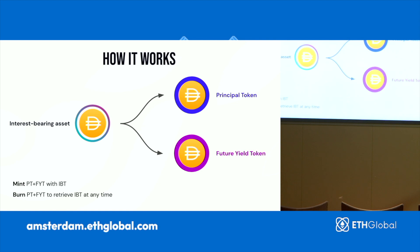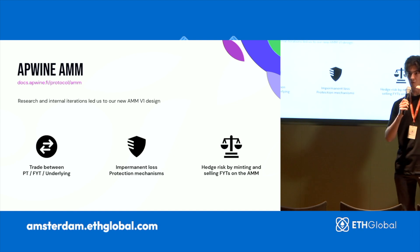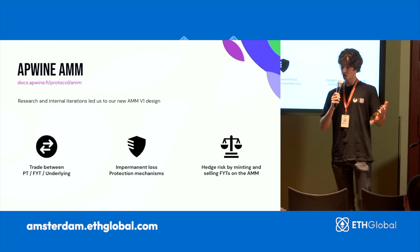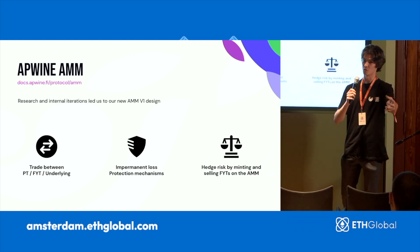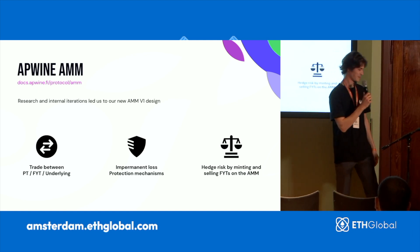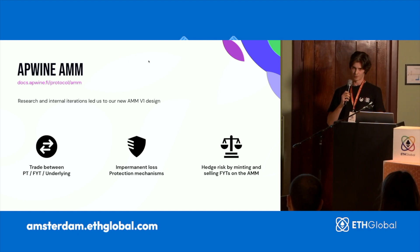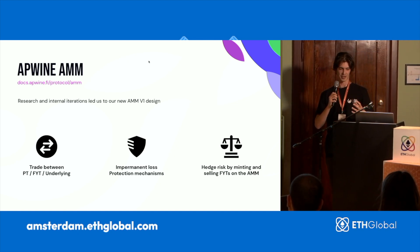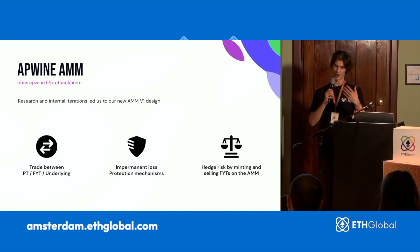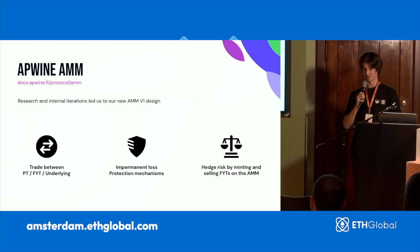Once you get this, you can build amazing strategies with the AMM that we built. The FYT and the PT can be freely traded at any time on the APWine automated market maker, just like if you were on Uniswap. So if you sell your FYT, you basically get your yield ahead of time. Our APWine AMM — we iterated on it for a few months, and we found the best design so that you can trade between PT, FYT, and underlying. I'm going to show why it's very necessary in our case and how you can build amazing strategies on top of this AMM.